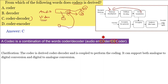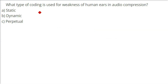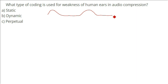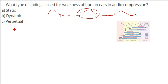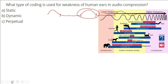What type of coding is used based on the weakness of human ears in audio compression? Every human ear has limitations. This science is used to reduce the space audio takes in a system. Silence in a sound wave can be truncated, but the parts where speech occurs cannot be removed. The answer is 'perceptual' coding.